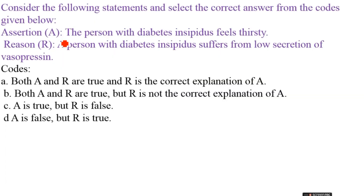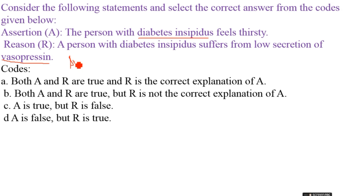A person with diabetes insipidus feels very thirsty due to water loss through urine, as the kidney cannot concentrate urine properly. This condition is caused by low secretion of vasopressin, also known as ADH (anti-diuretic hormone). Answer: A.